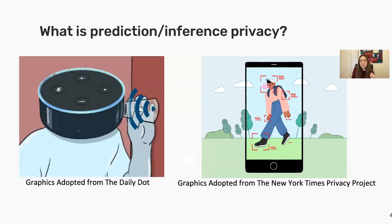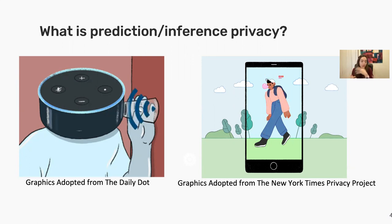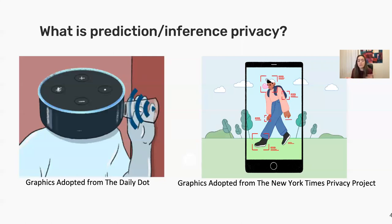In this work, what we're targeting is prediction or inference privacy. What this means is the privacy of queries and the raw data that we send to online cloud services to run a task for us and return the results. So you take a picture with your phone, you send it to a service provider to run some filters on it, and then you get the image back. There you're sending your raw image that could have some sensitive information that is irrelevant to the task the service provider is supposed to run.